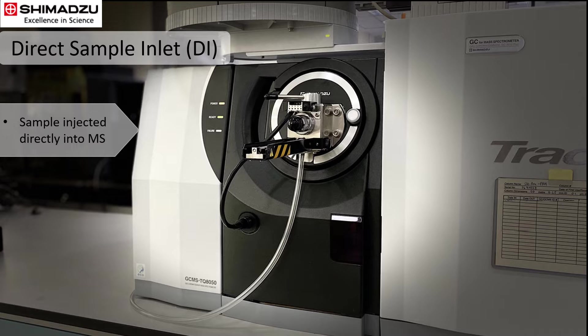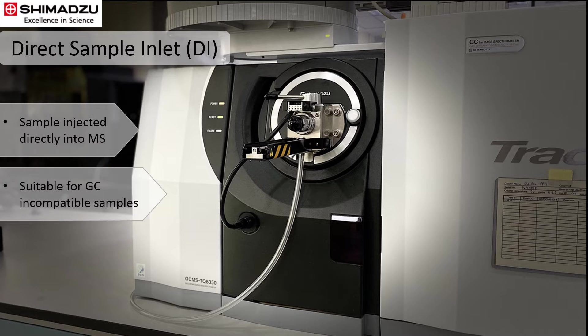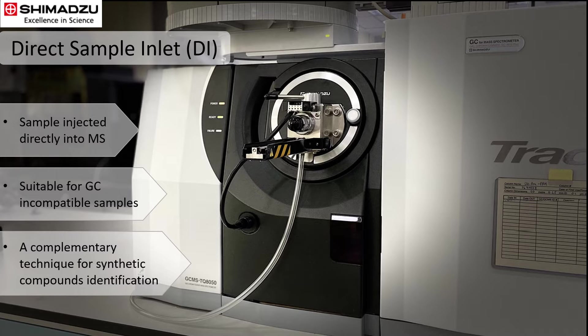This makes it very useful for samples that are incompatible with GC, for example, high molecular weight compounds or non-volatile compounds. DI can be very useful as a complementary technique for synthetic compound identification during drug development.